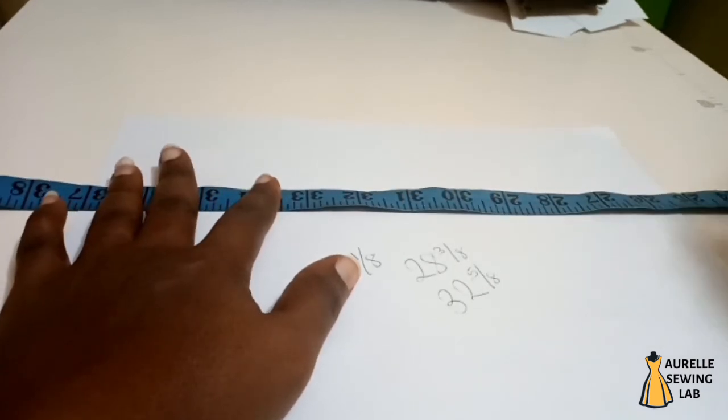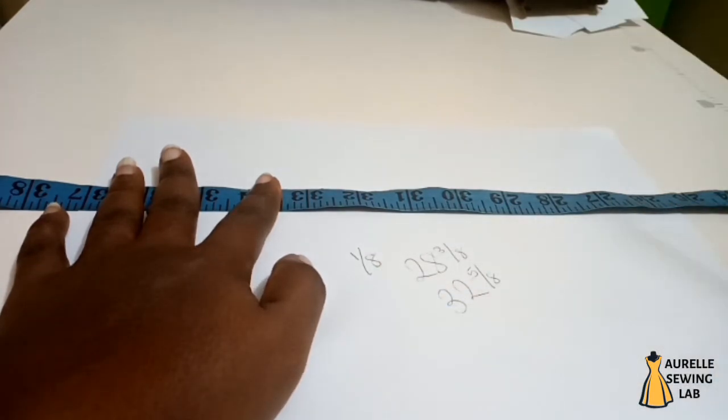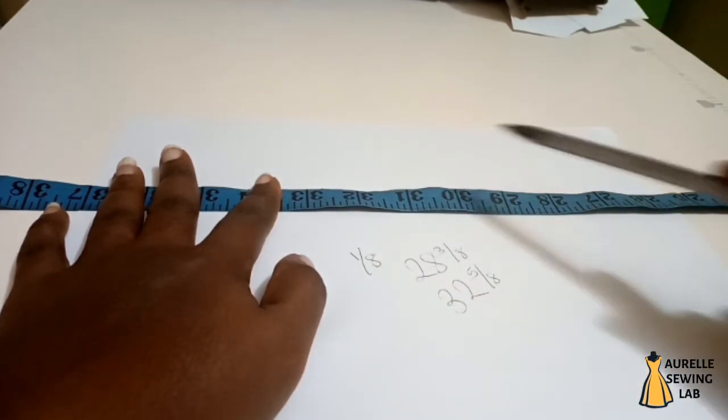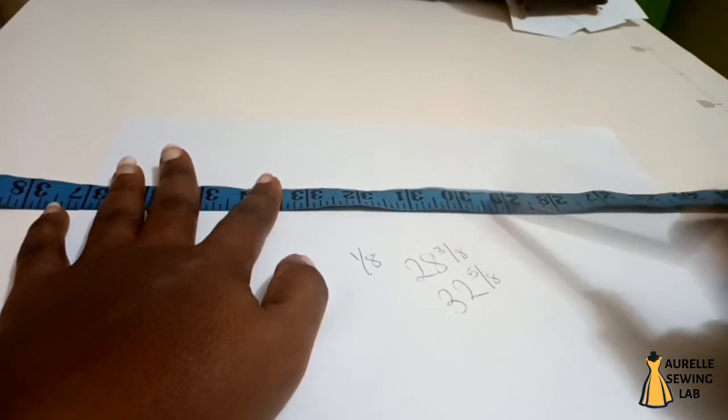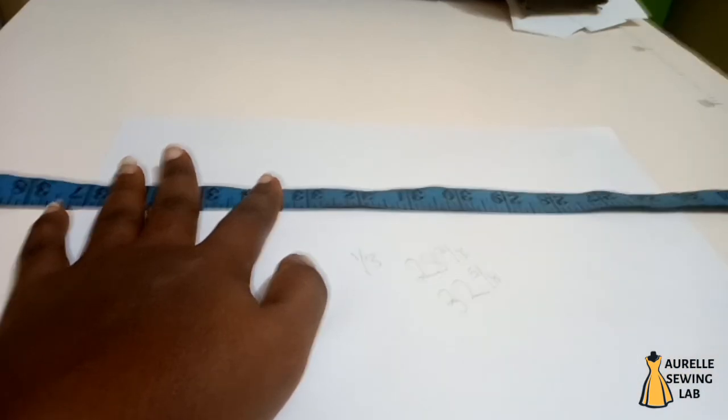So I hope you've learned something today. Do not ignore these numbers, just take them as one eight, two eight, three eight, four eight, five eight, six eight, seven eight before going to the next whole number. Don't ignore them, use them when taking body measurements.